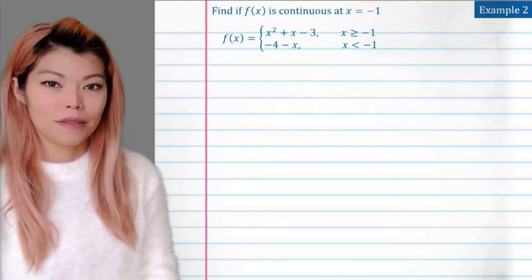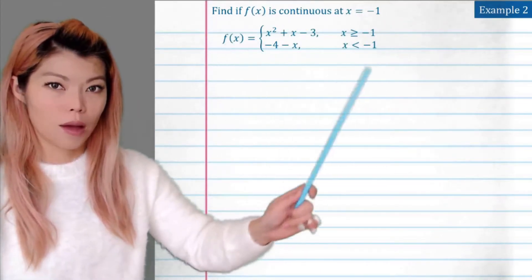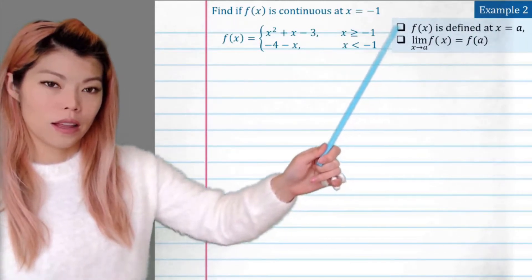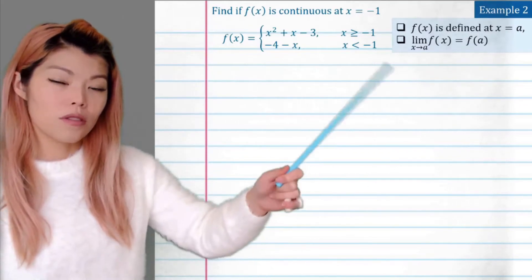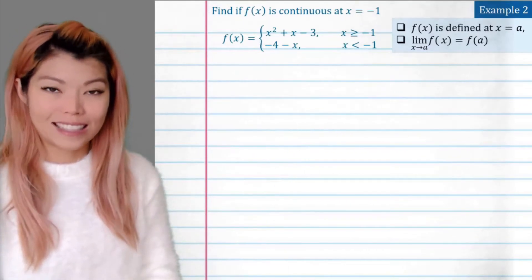Example 2. Find if f of x is continuous at x equals minus 1 for this hybrid function. So all we have to do is prove whether these two things are true or not. If they're both true, then we are continuous. If one of them fails, we are discontinuous.